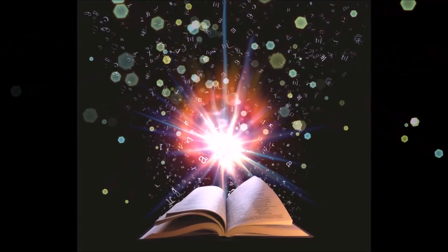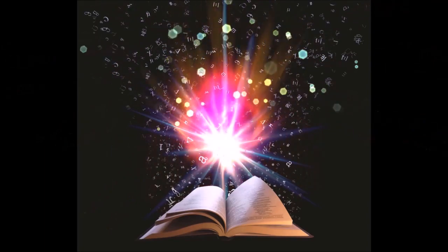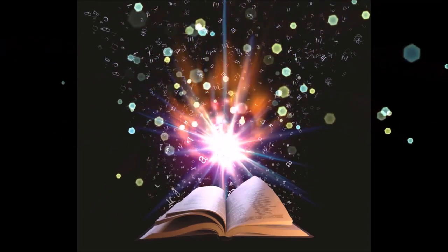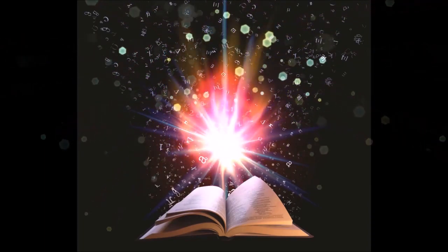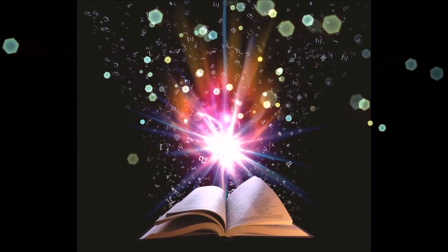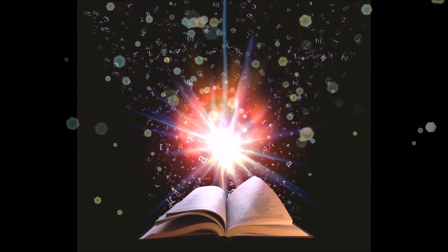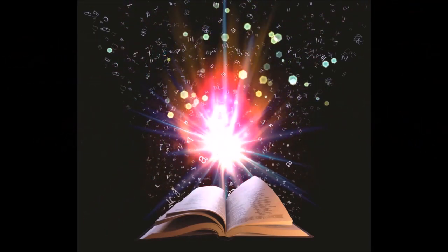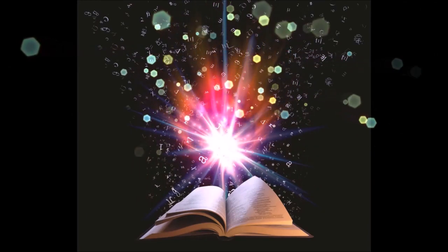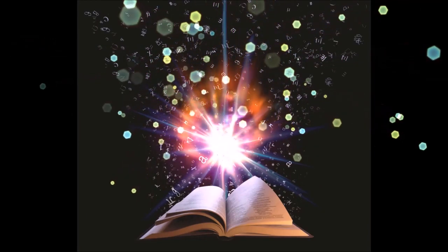The Akashic records are a compendium of all human events, thoughts, words, emotions, and intent ever to have occurred in the past, present, or future. They are believed by theosophists to be encoded in a non-physical plane of existence known as the etheric plane. Those with clairvoyance have the ability to access that information.